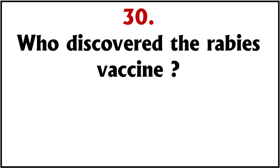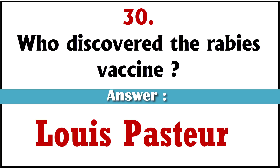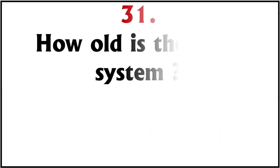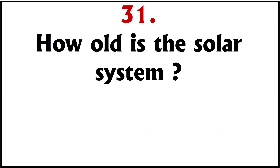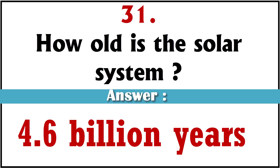Who discovered the rabies vaccine? Louis Pasteur. How old is the solar system? 4.6 billion years.